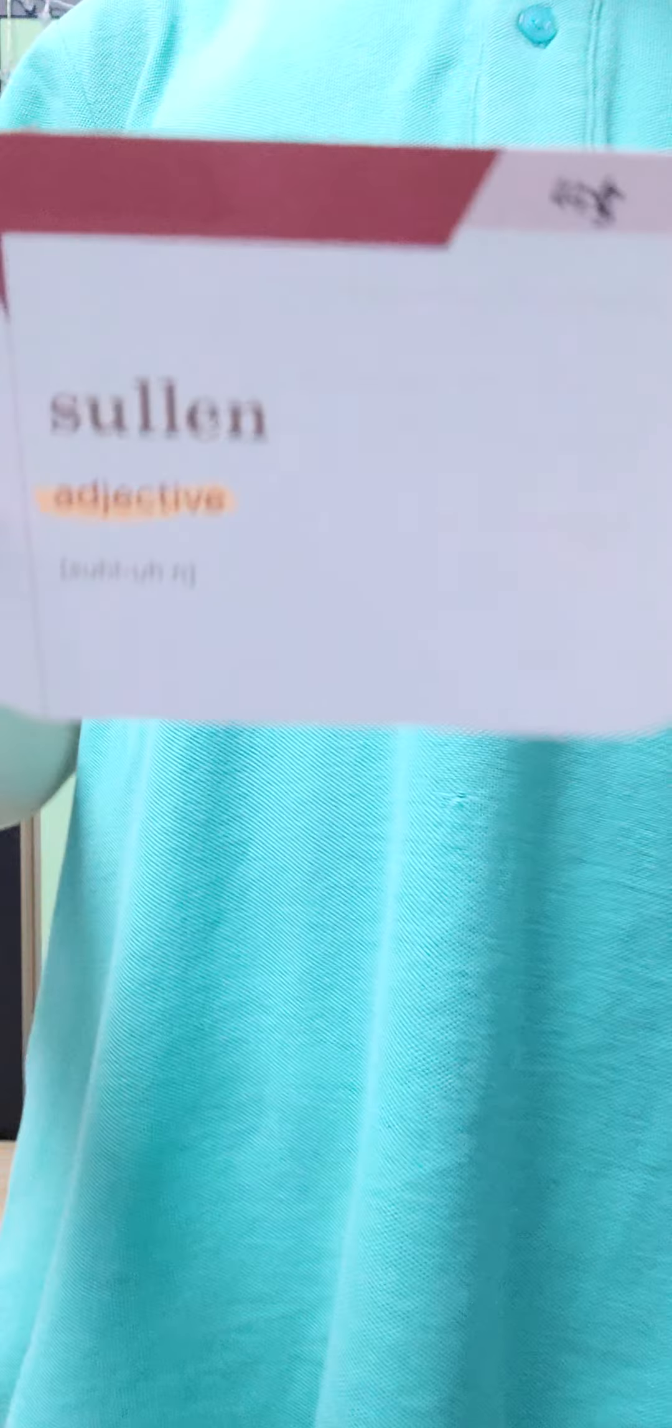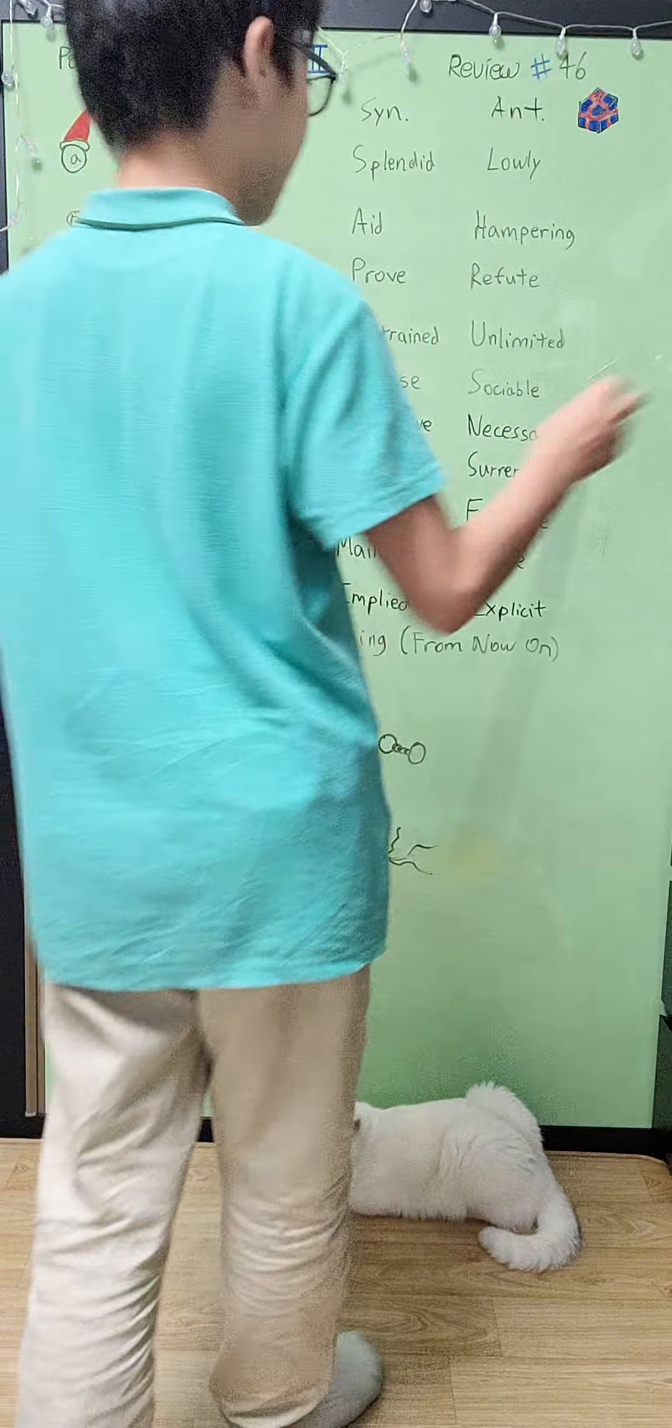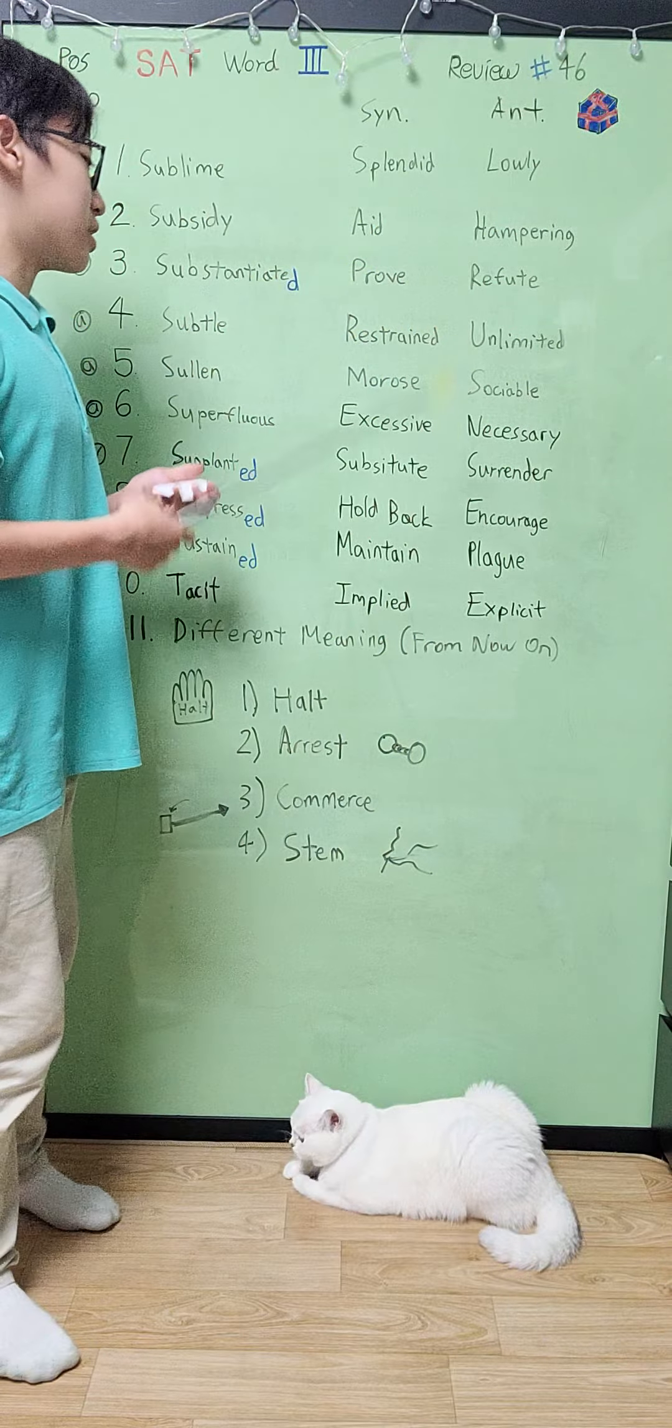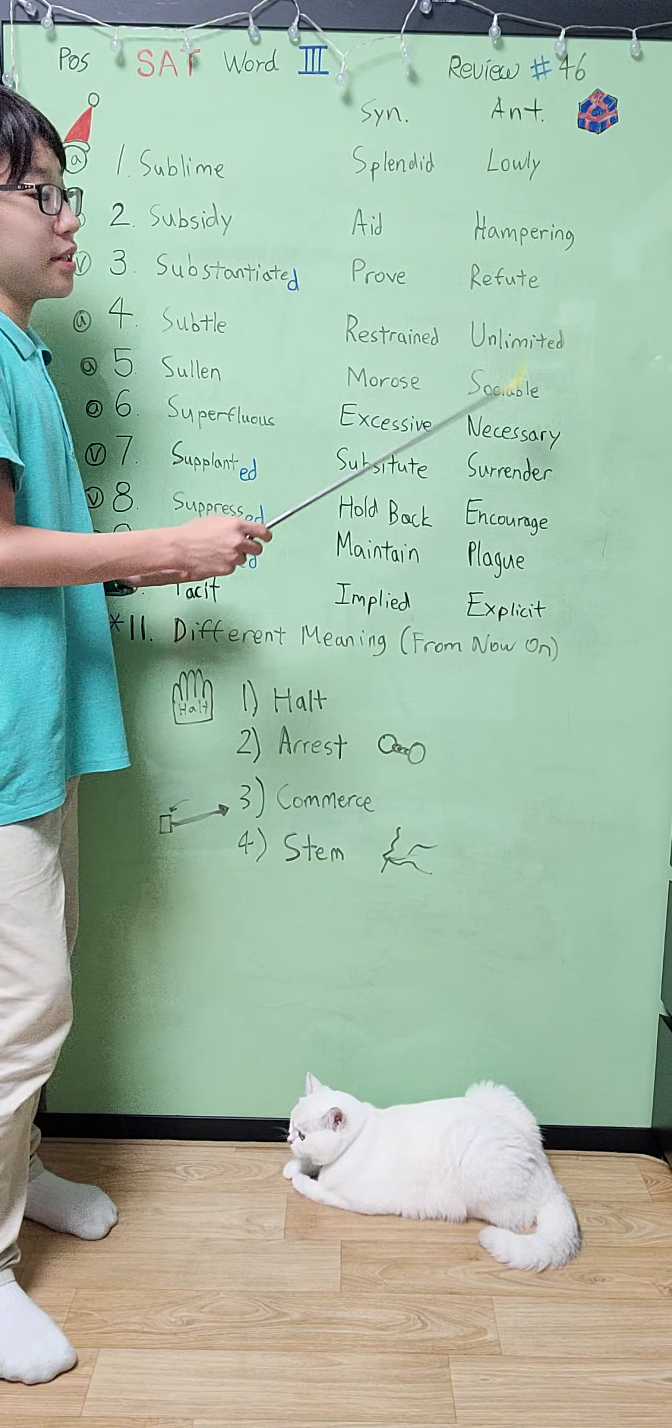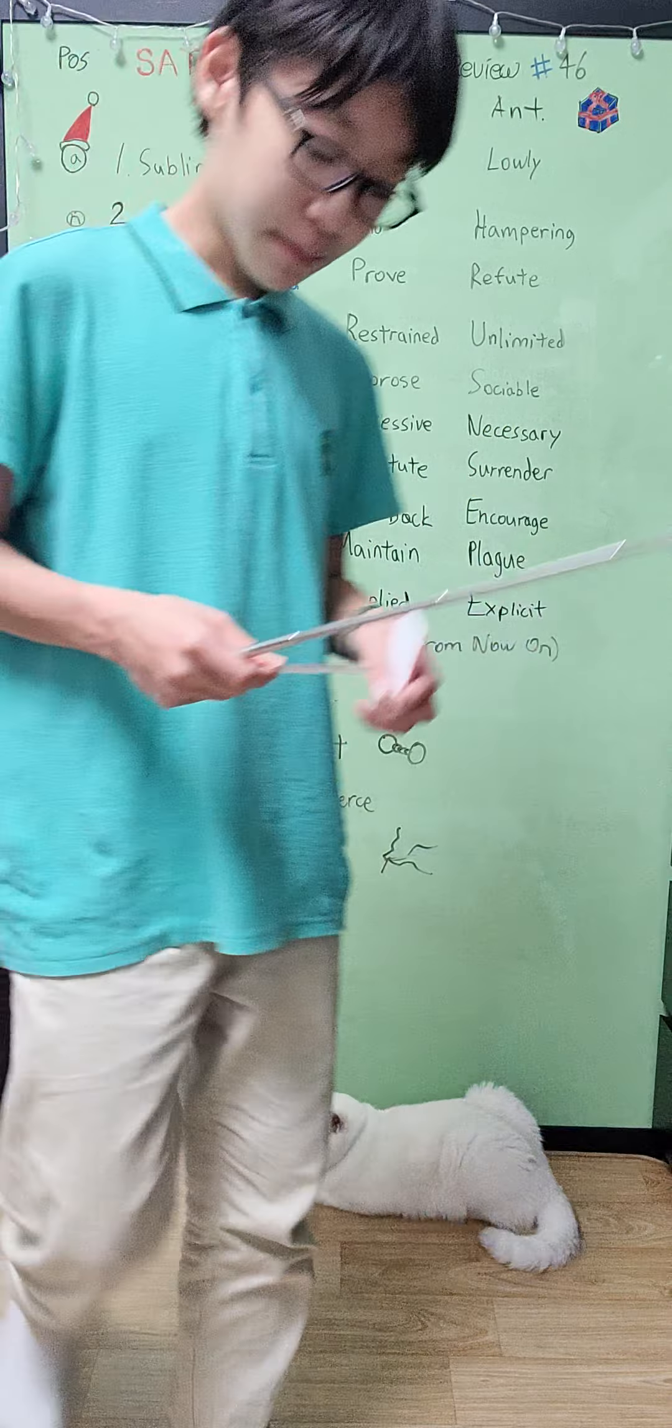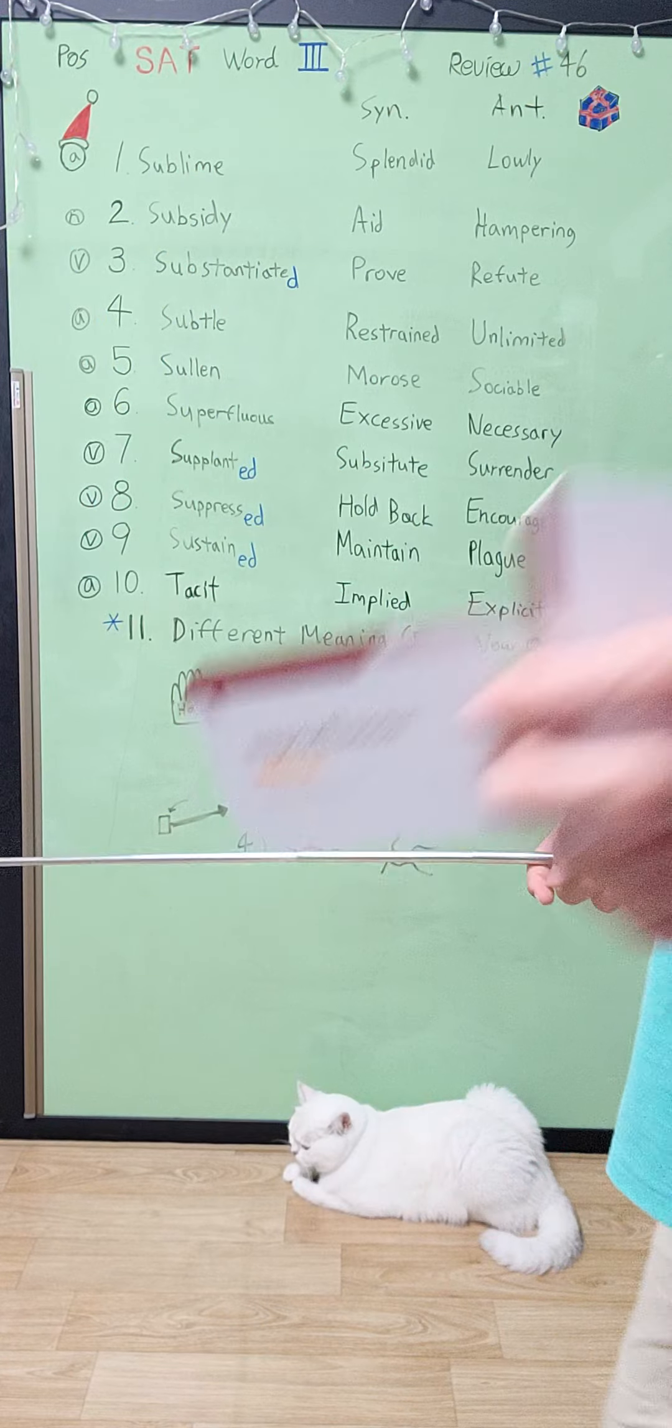Our next word is sullen. It basically means to be silently ill-humored, like it also means to be surly - that's the synonym - or morose. The antonym would be more like sociable, that kind of makes sense.